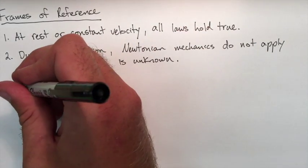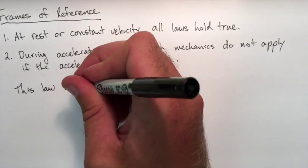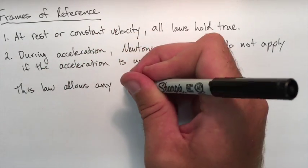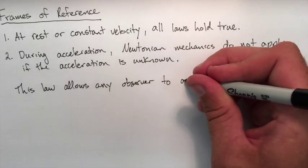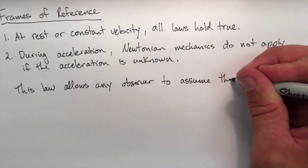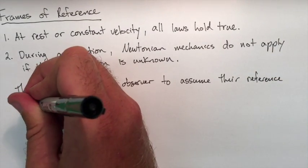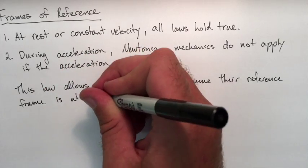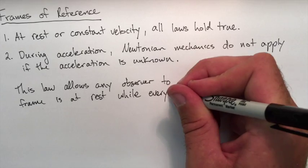This law allows any observer to assume their reference frame is at rest while everything moves around it. What that means is, if you're at a bus stop, you can assume you're at rest while a bus goes by, versus if you're sitting on the bus, you can also assume you're at rest while the world around you moves past the windows.